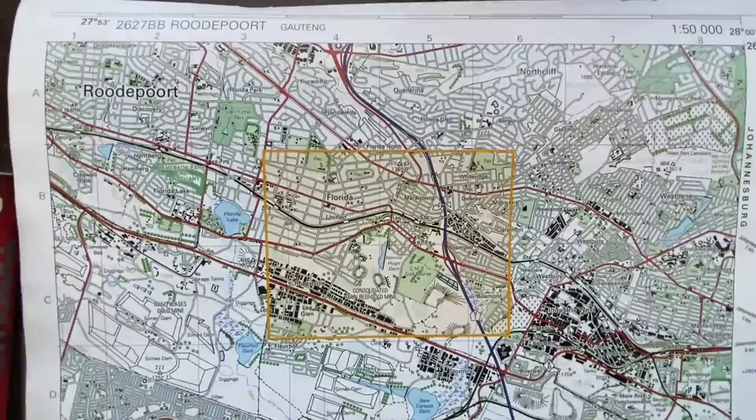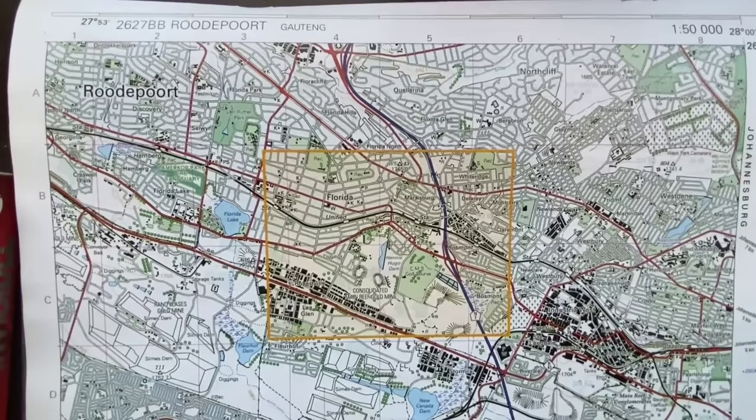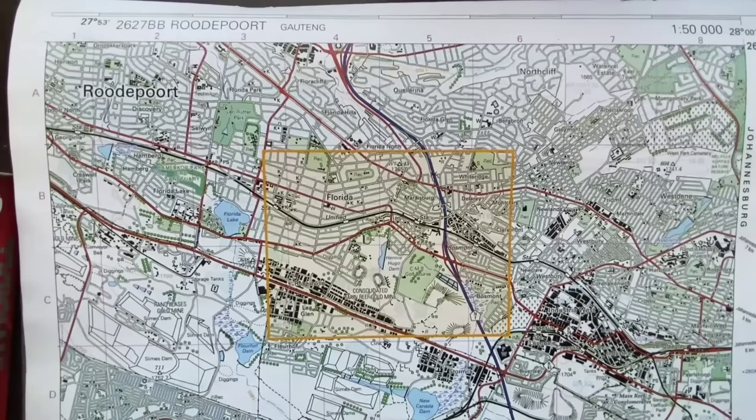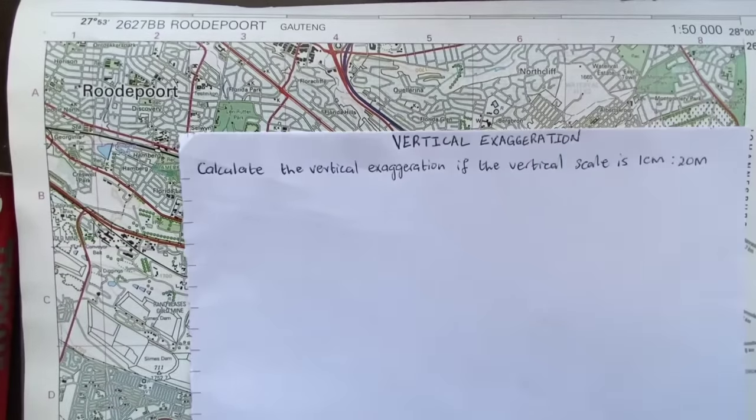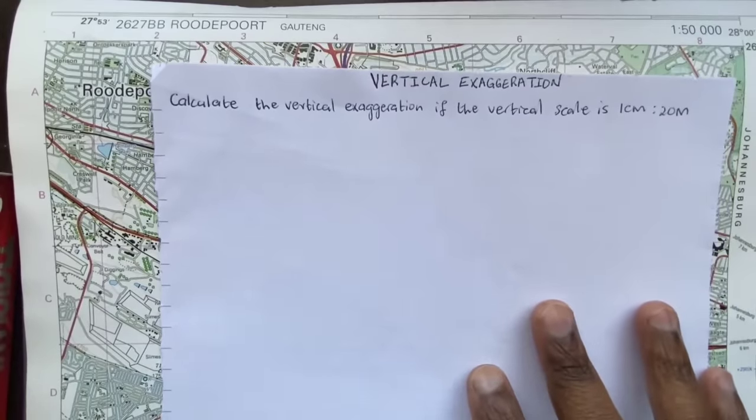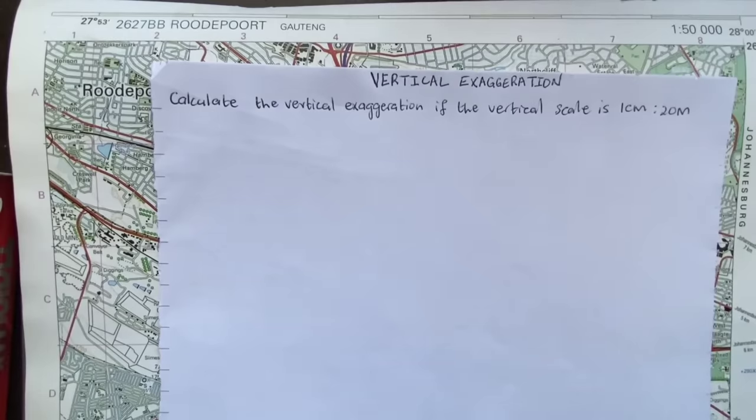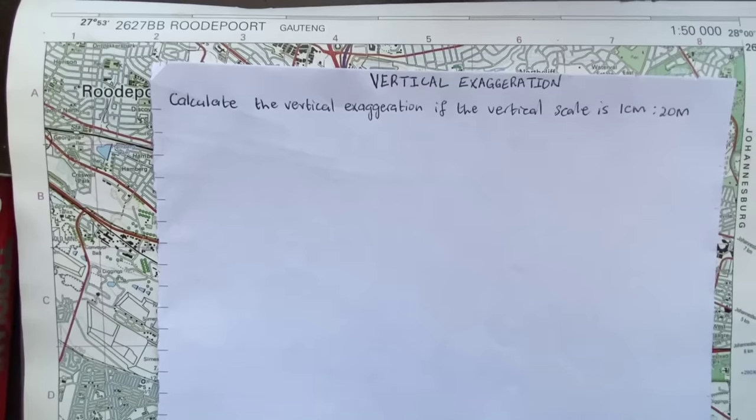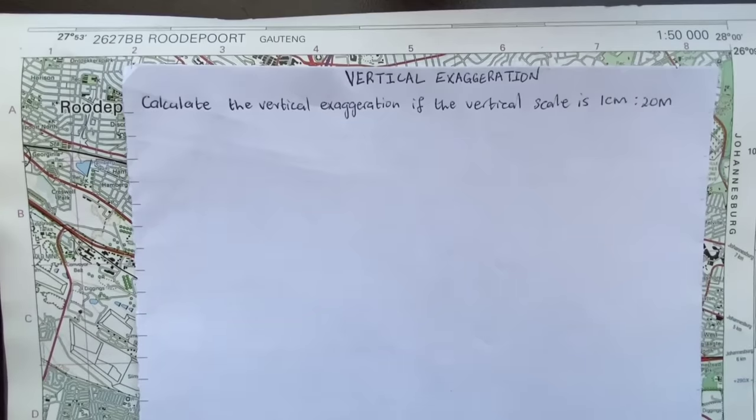Welcome to yet another tutorial video of map skills. In this video we're looking at what we call vertical exaggeration. With me here I have a typical exam question which reads: calculate the vertical exaggeration if the vertical scale is one centimeter represented by 20 meters.